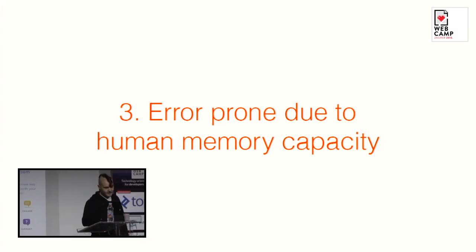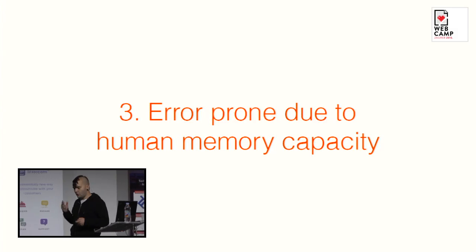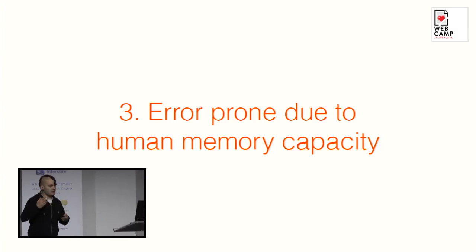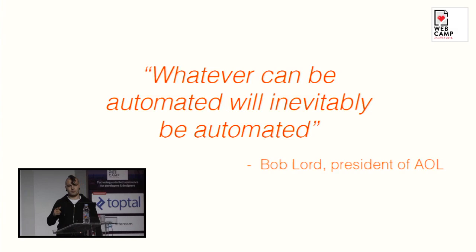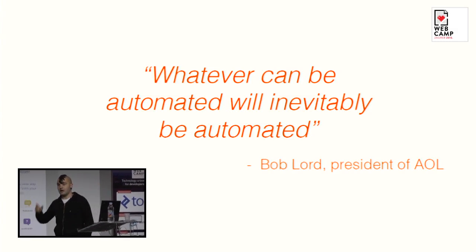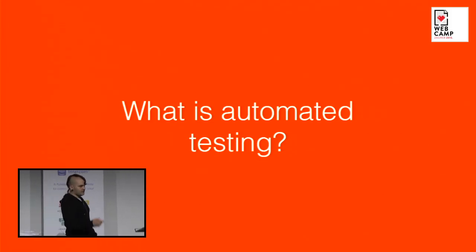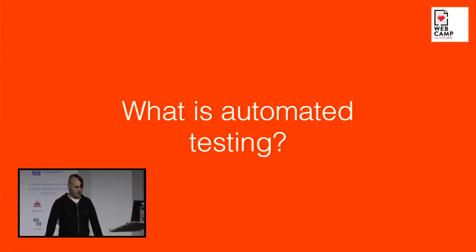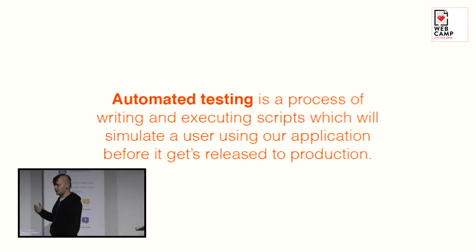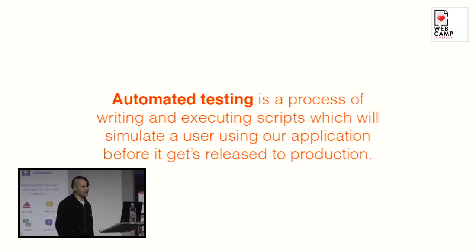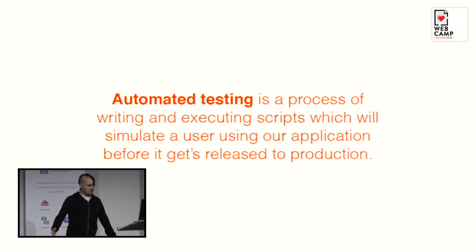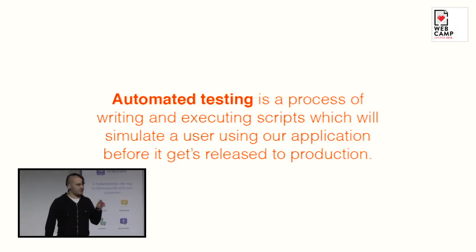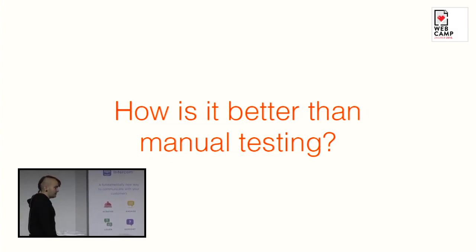Through all of mankind, people have tried to automate repetitive tasks so they can do them quicker and not get bored. Bob Lord of AOL once said: whatever can be automated will inevitably be automated — and it should be automated. So let's talk about automated testing. Automated testing is a process of writing and executing scripts that simulate user interactions on our application before the application goes to production.